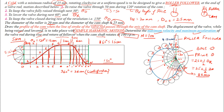Join all the roller circles with a smooth freehand curve that is tangent to every roller follower circle. This curve represents the complete cam profile. This completes the cam profile drawing for the given problem.